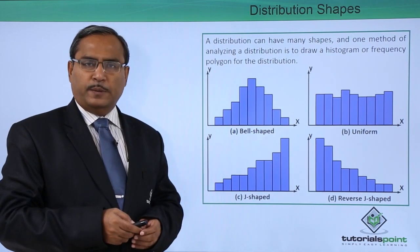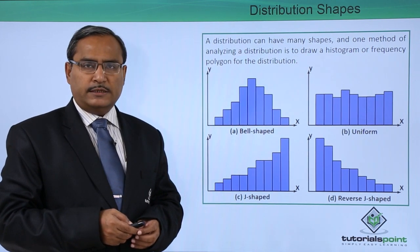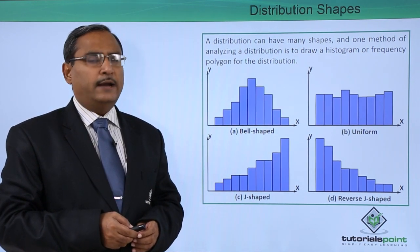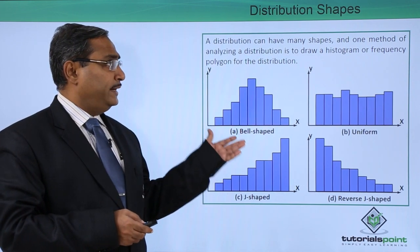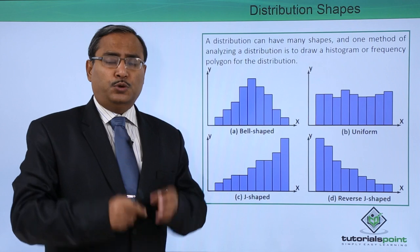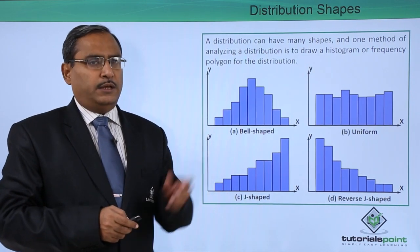In the earlier video, we discussed what is a histogram, what are its disadvantages and advantages, what is a frequency polygon and also aegis. Here you can find that to get the distribution shapes, we should draw the frequency polygon or the respective histograms.